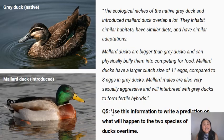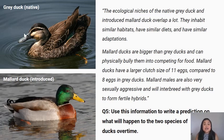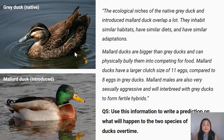The ecological niches of the native grey duck and introduced mallard duck overlap a lot — they inhabit similar habitats, have similar diets, and similar adaptations. Mallard ducks are bigger than grey ducks and can physically bully them in competition for food. Mallard ducks also have a larger clutch size of 11 eggs compared to the grey duck's 8 eggs, and mallard males are sexually aggressive and will interbreed with grey ducks to form fertile hybrids. Question five: Use this information to write a prediction of what will happen to the two species of ducks over time — one sentence is enough.